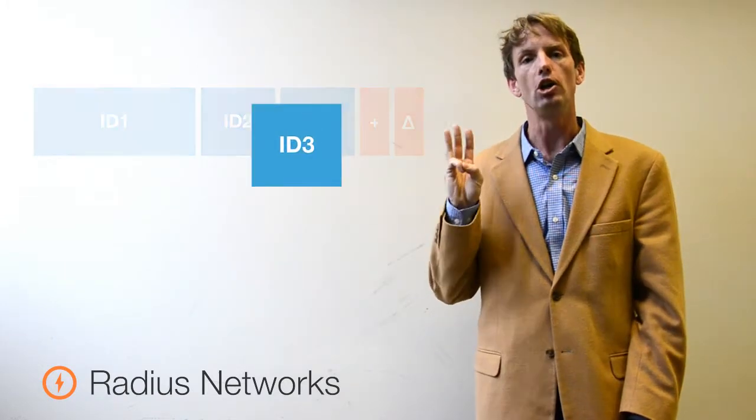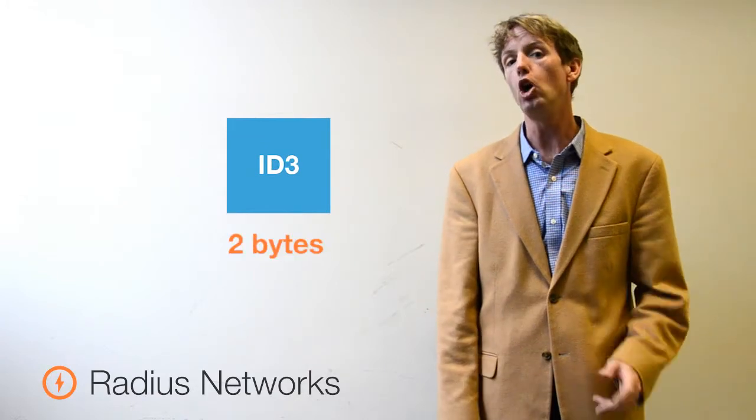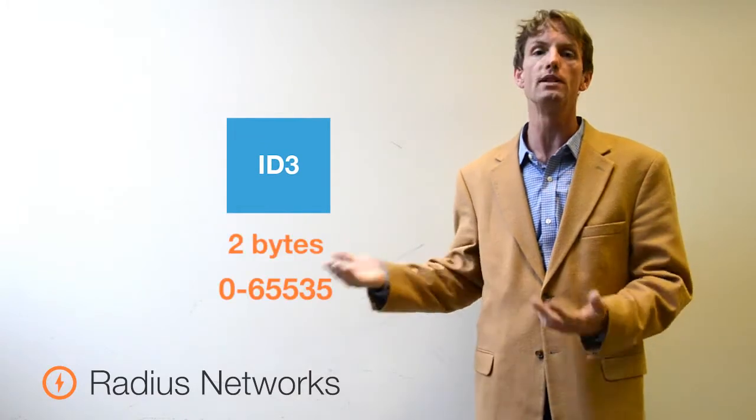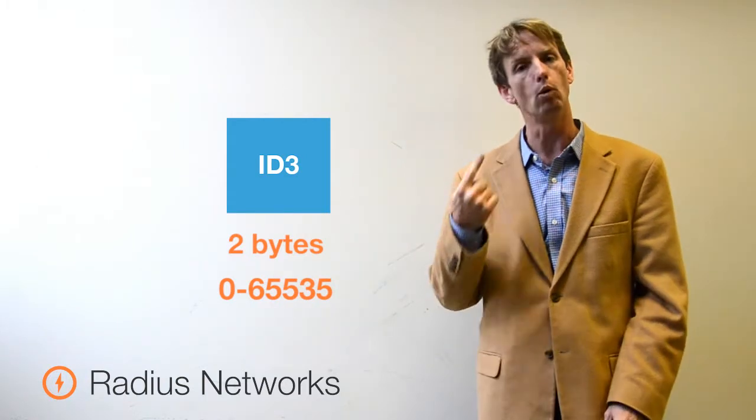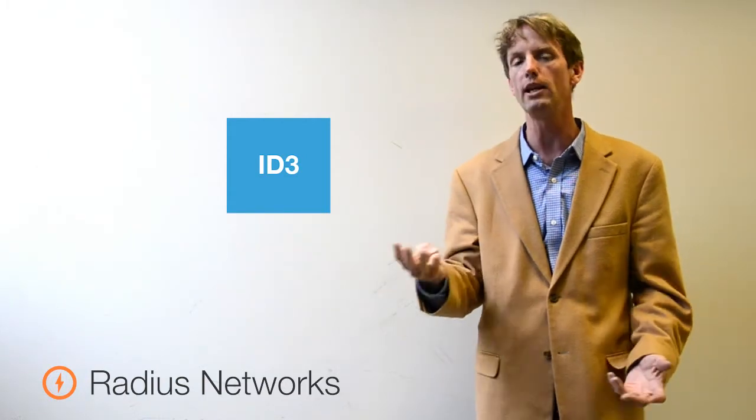The third field is called ID3. This is also a two-byte field that ranges between 0 and 65535. This is often used as a sequential beacon identifier: number one, number two, number three, and so on.